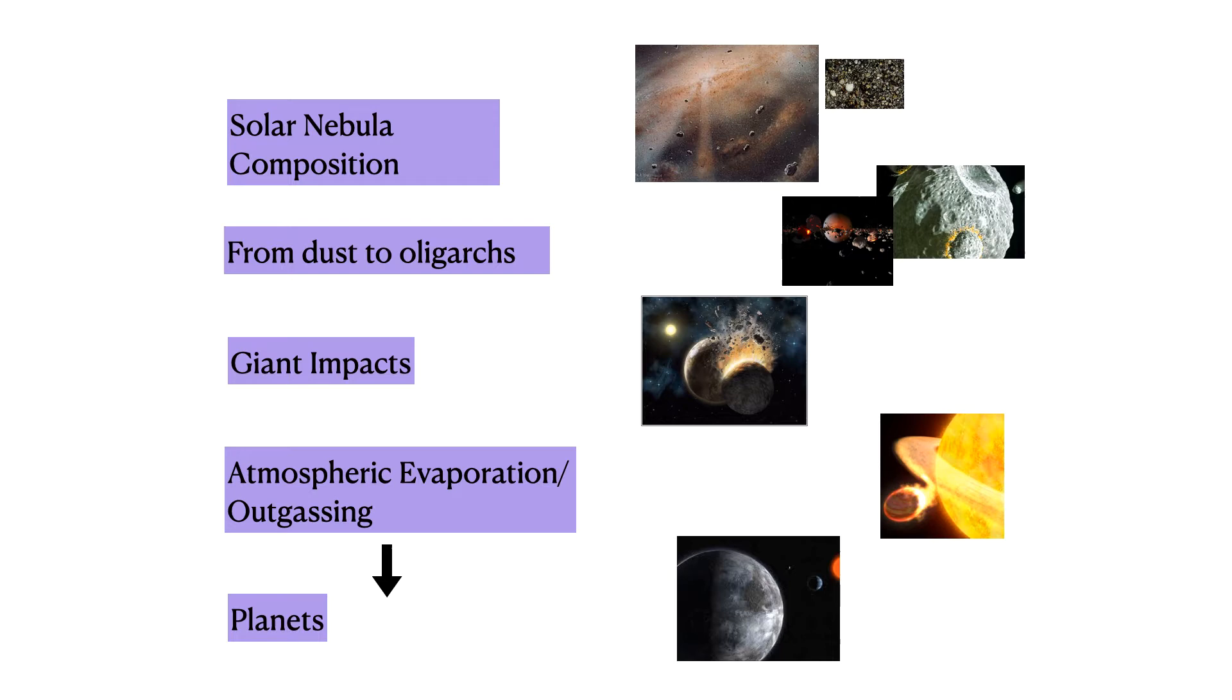However, when they become big enough to interact gravitationally, they're going to start colliding in this giant impact phase and perhaps modify their composition during these collisions. We also think that there could be outgassing of atmospheres or atmospheric evaporation or atmospheric loss that can modify the composition of a planet. But by the end, you end up with a planet of a certain mass, a certain radius, and a certain composition that reflects all these processes that produced this outcome.